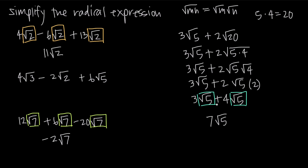This example goes beyond basic radical addition and subtraction, but it shows you have to be careful: just because you see two different values under the radical signs doesn't necessarily mean you can't combine them. You have to look out for cases where you can factor the radicand — like factoring 20 into 5 and 4. That's how you deal with addition and subtraction of radical terms.